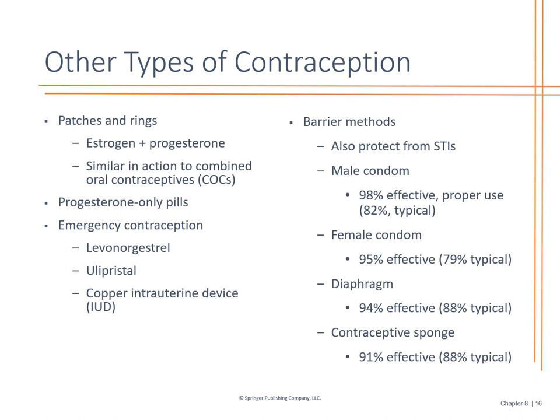Other types of contraception include patches and rings, progesterone-only pills, and emergency contraception such as Plan B, which is recommended within 48 hours. We also have IUDs: the Copper T, which is good for 10 years, and the Mirena, which is hormone-based and good for 5 years. Barrier methods include male condoms, female condoms, and diaphragms. Whatever the choice, as long as they're using some form of contraception — and understanding that birth control pills do not prevent STDs — you need both.